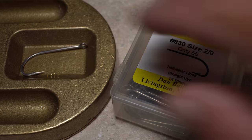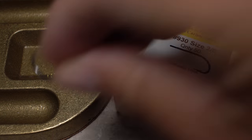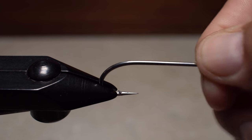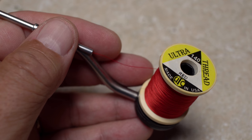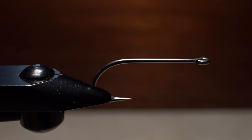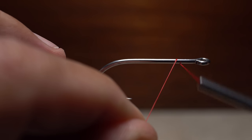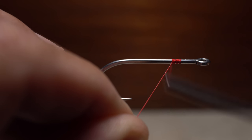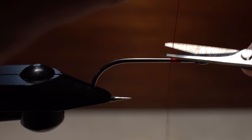I begin with a 2-aught Daiichi No. 930 saltwater hook. After getting the hook firmly secured in the jaws of my tying vise, I load a bobbin with a spool of red UTC 140 denier. Start your thread on the hook shank, leaving a hook eye plus space behind the eye. Take a few wraps rearward before snipping the tag off close.